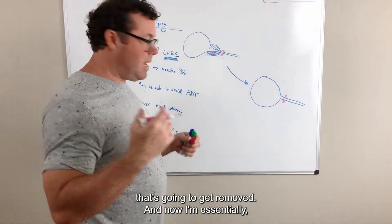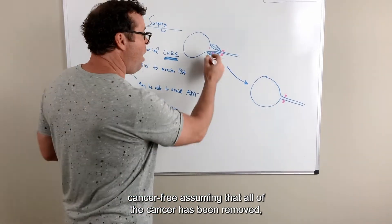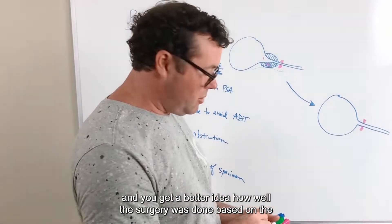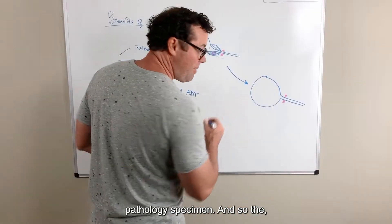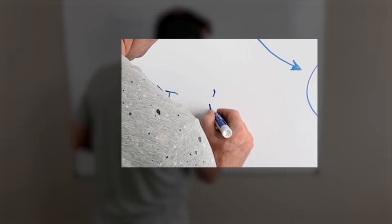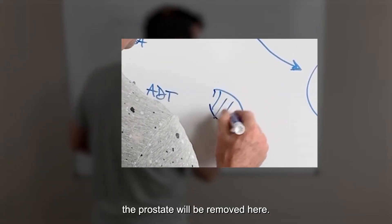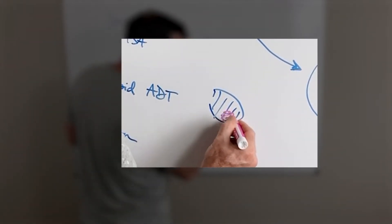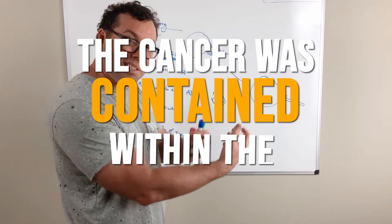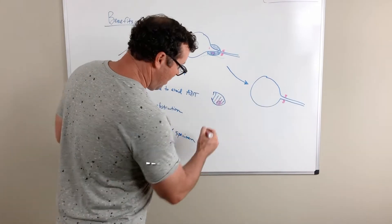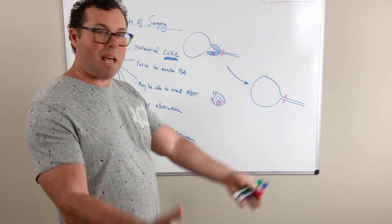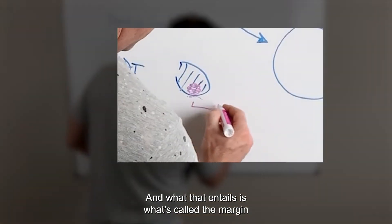That's going to get removed. And now I'm essentially cancer free, assuming that all of the cancer has been removed. And you get a better idea how well the surgery was done based on the pathology specimen. The prostate will be removed here. It will be looked at by the pathologist and they will say either that the cancer was contained within the prostate or it's possible that the cancer may have involved areas outside of the prostate. And what that entails is what's called the margin status.